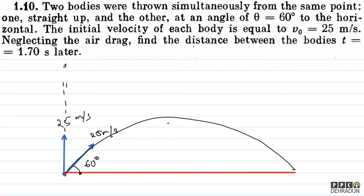So basically, if both bodies are in the air at t equal to 1.70 seconds, then I can use relative motion in which I will cancel out the gravitational force — since both bodies experience the same gravitational acceleration.